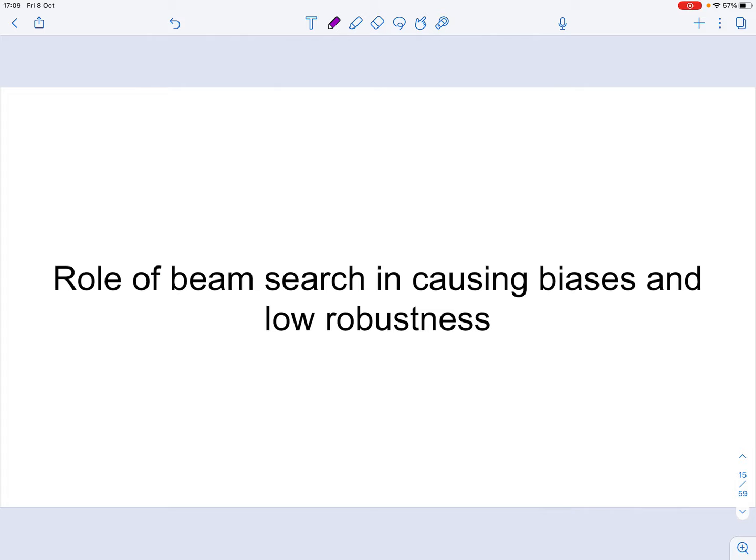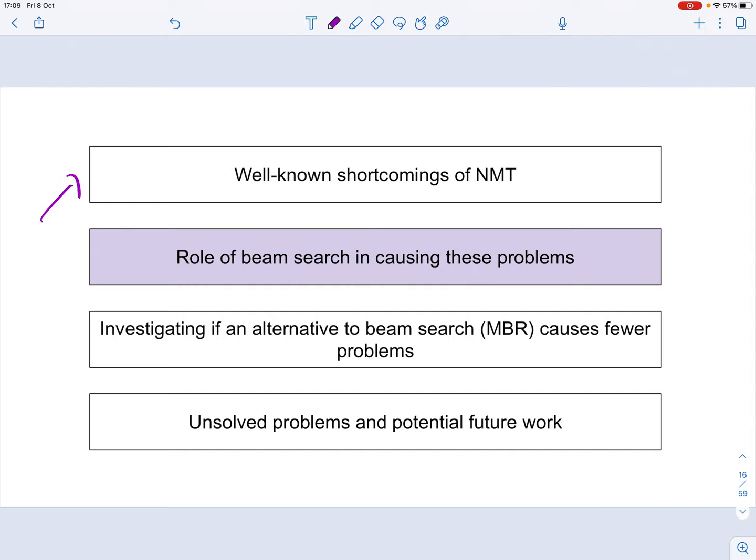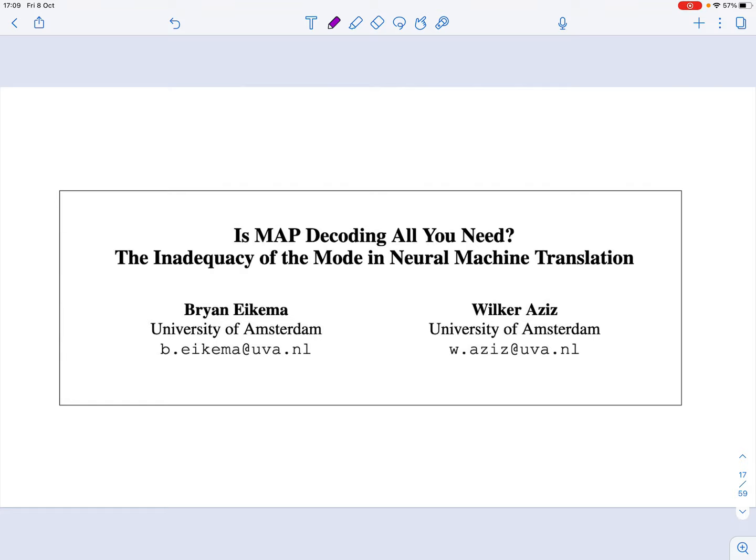Moving on to the second part, which is discussing the role of beam search in causing biases and low robustness. And remember, this is the second part after we already talked about well-known shortcomings of NMT.